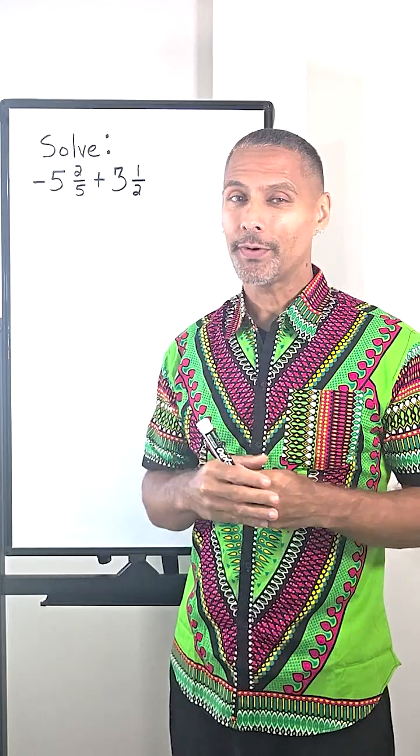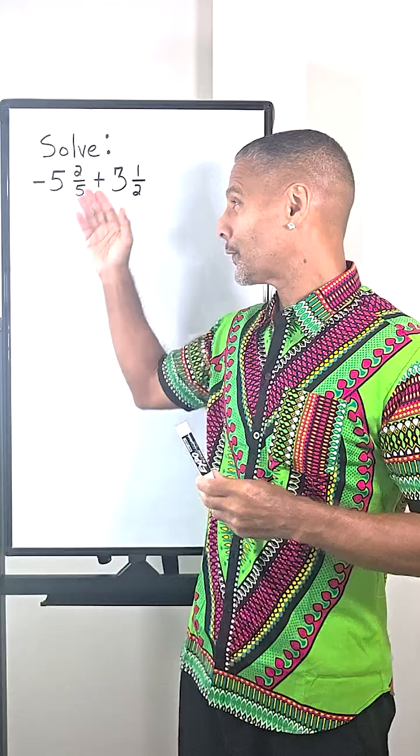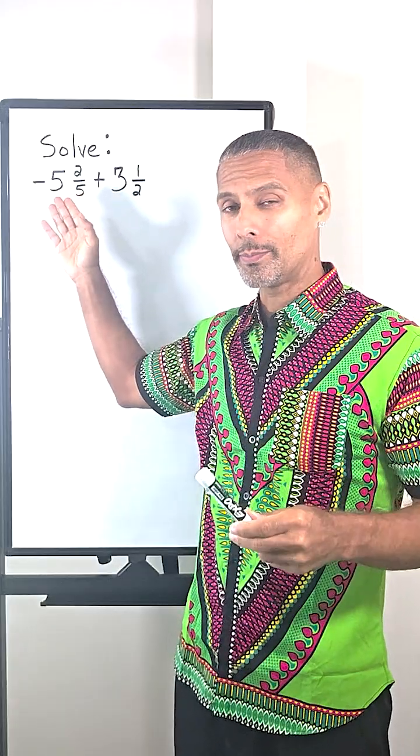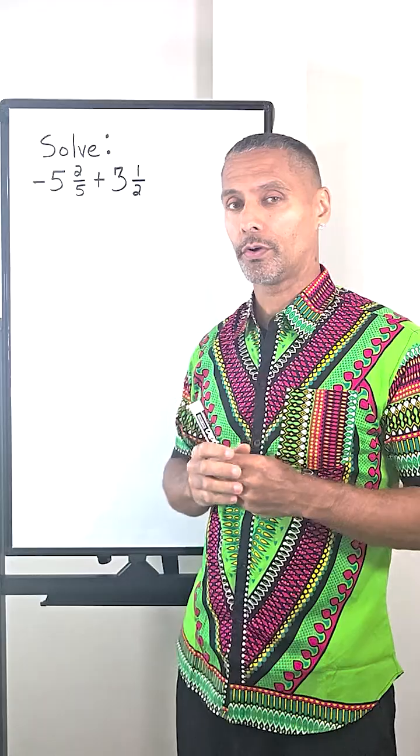All right, we have the problem negative five and two fifths plus three and a half. Now we should notice that our first term has a larger absolute value because it is further away from zero. That means that our answer is going to result in a negative.